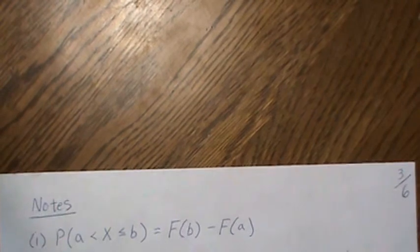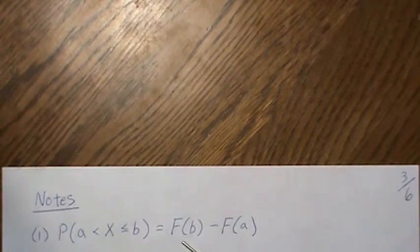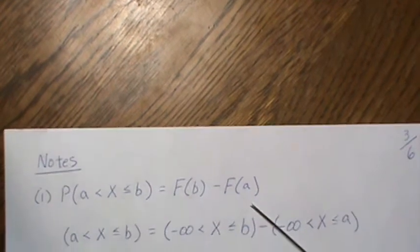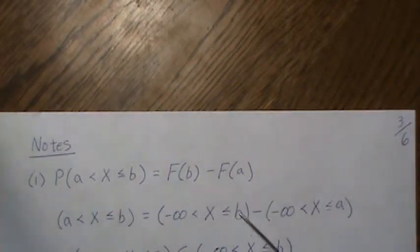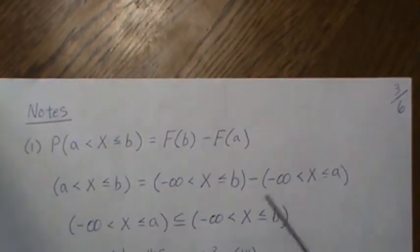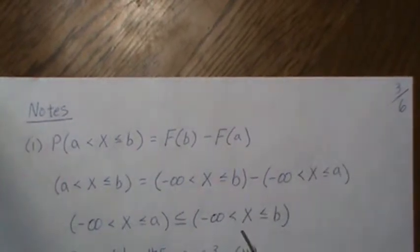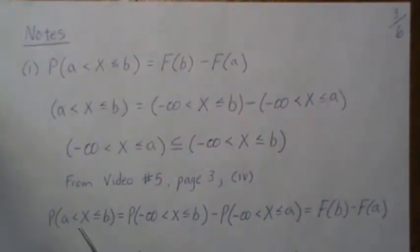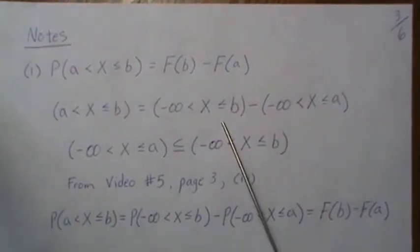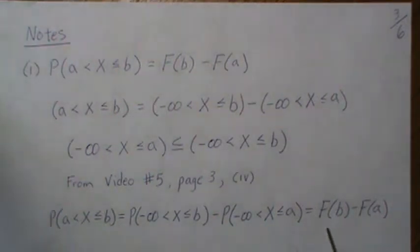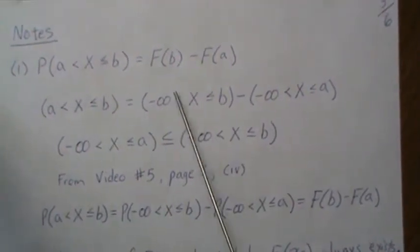A few notes from that theorem: we can represent probabilities of interval (A, B] by the difference of CDFs — F of B minus F of A. This is because the set (A, B] equals the set up to B minus the set up to A, and since that smaller set is a subset of the larger, from video five the probability is the difference, giving F of B minus F of A.